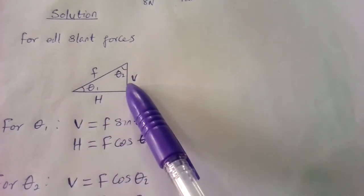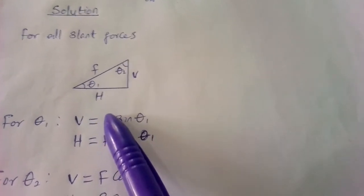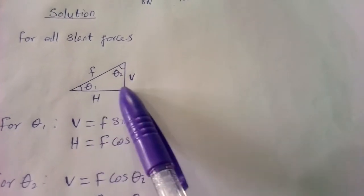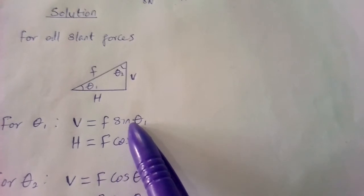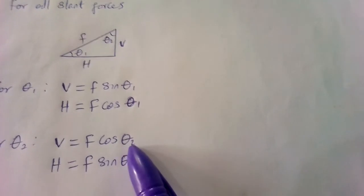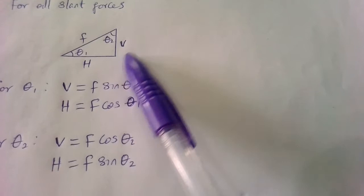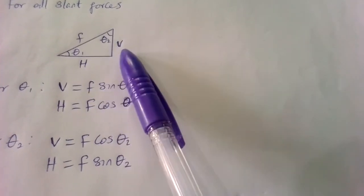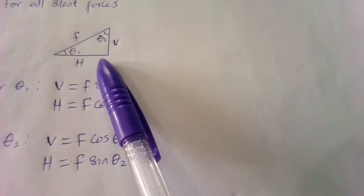For easy understanding: whenever a side is facing an angle, that side uses sine, while the other side uses cosine. Looking at theta 1, the vertical is facing theta 1, so the vertical component equals F sin(θ1) while the horizontal equals F cos(θ1). But if we use theta 2, then V = F cos(θ2) and H = F sin(θ2). The key point is: whichever side is facing the angle, it automatically uses F sin of that angle.